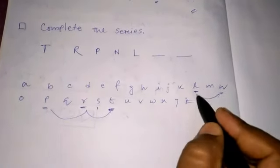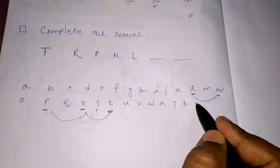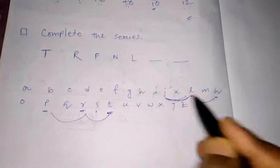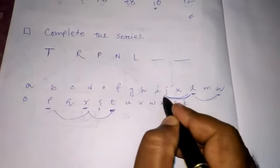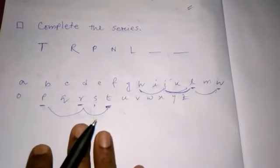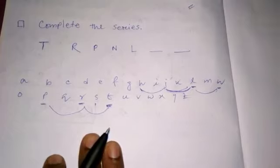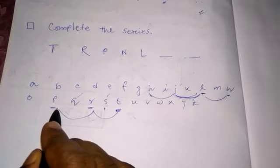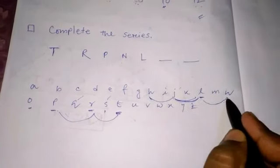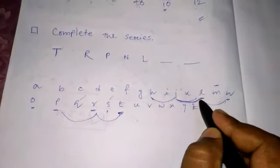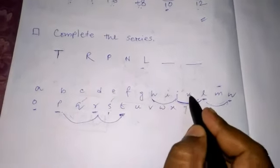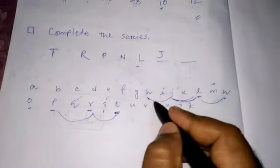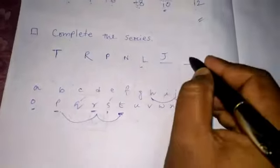The next letter should be J and the next one should be H. This is the series: T S of R, U of P, then O of N, then M of L, then K of J - that should be J - and the next one, I of H, that should be H.